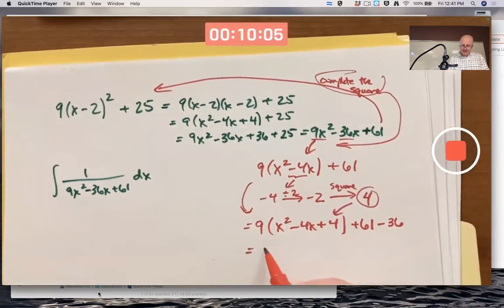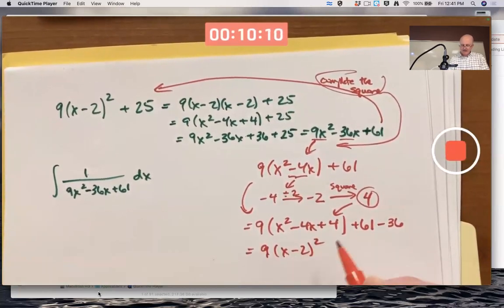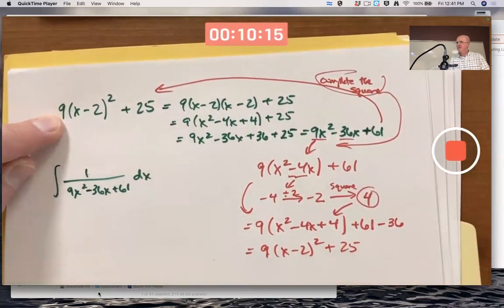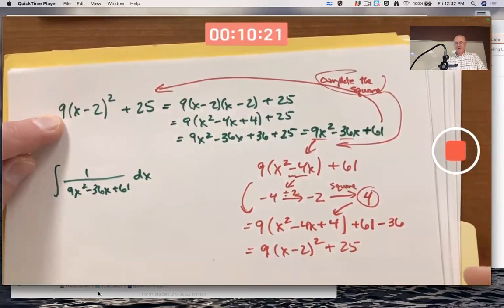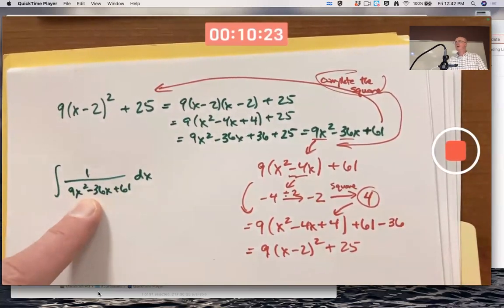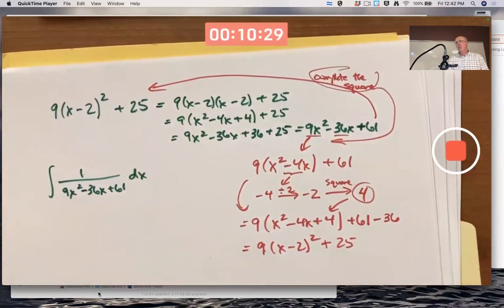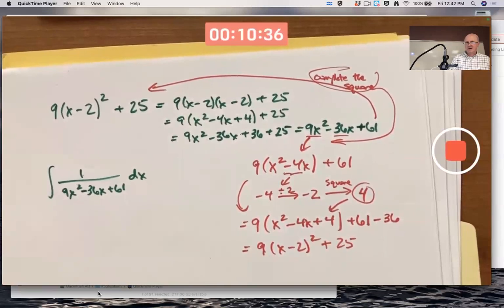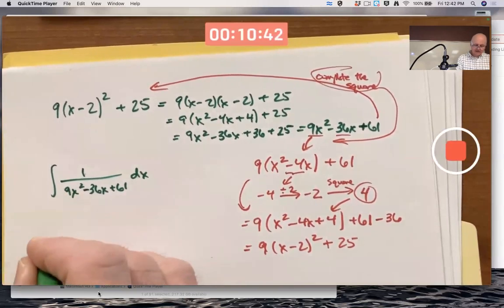And why do you do this? Because now this is a perfect square. It's (x - 2)² . And 61 minus 36 is 25. We got back to the original expression that I had up here. That's the process of how to complete the square. And whenever your quadratic in the denominator has complex roots, you've got to do that to help you do the integral.